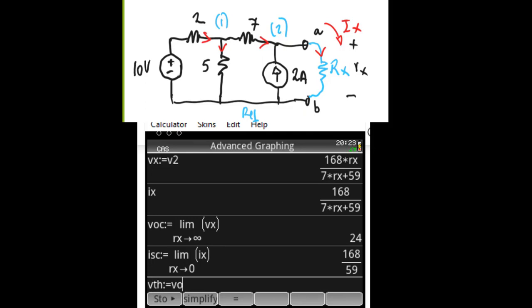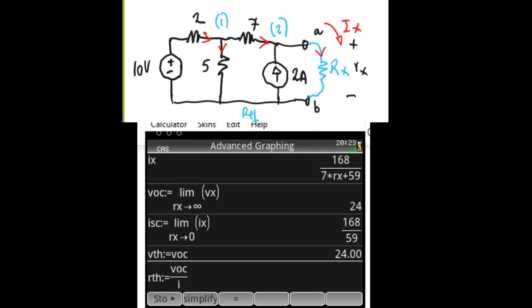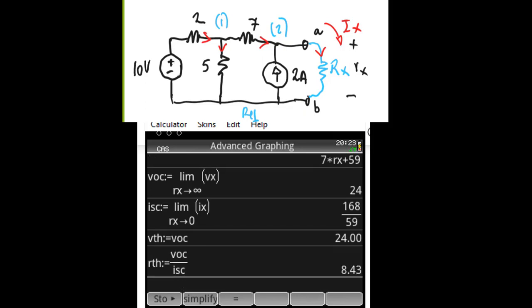So VTh is just Voc. We know that. And RTh is Voc divided by Ix short circuit. There. And that is our equivalent circuit.